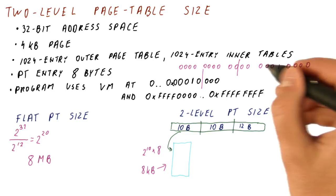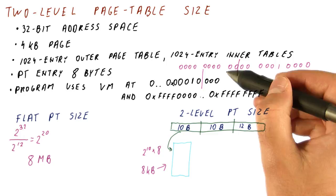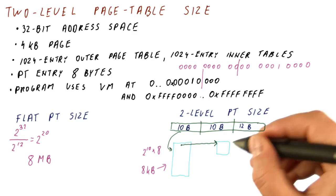This is the inner page number. As you can see, all of the addresses in this range have the same outer page number. We start at zero, we end at zero. So only the entry number zero here needs to point to an actual inner page table.